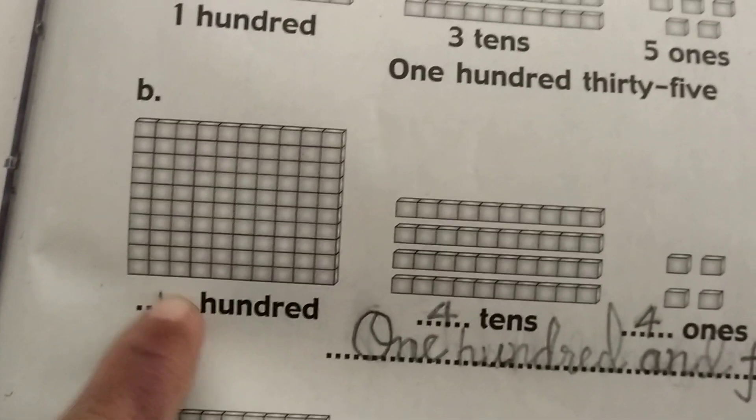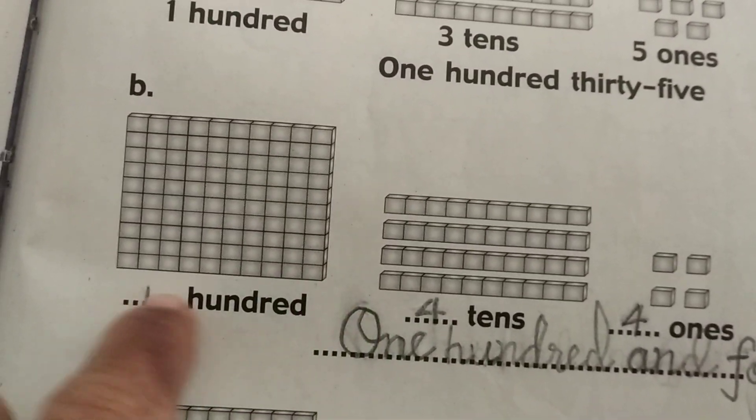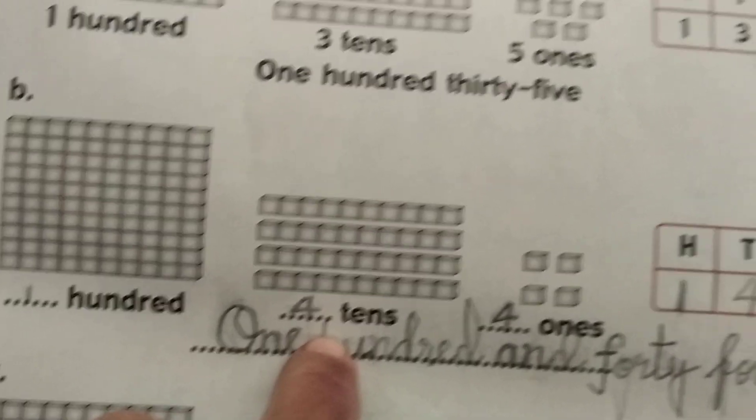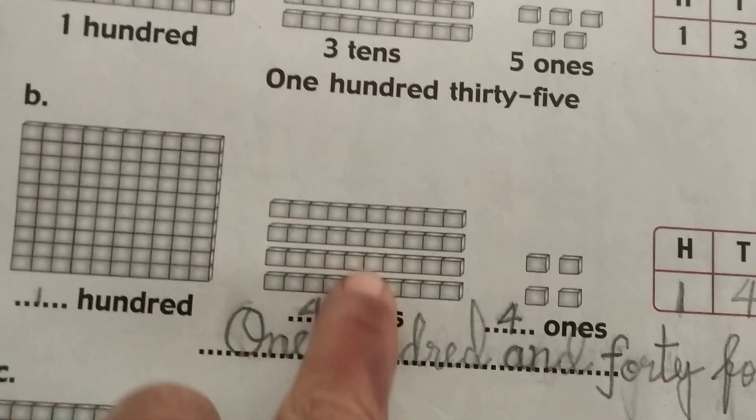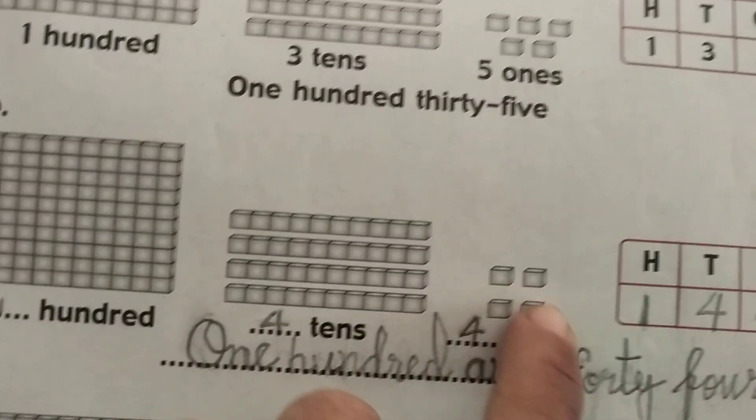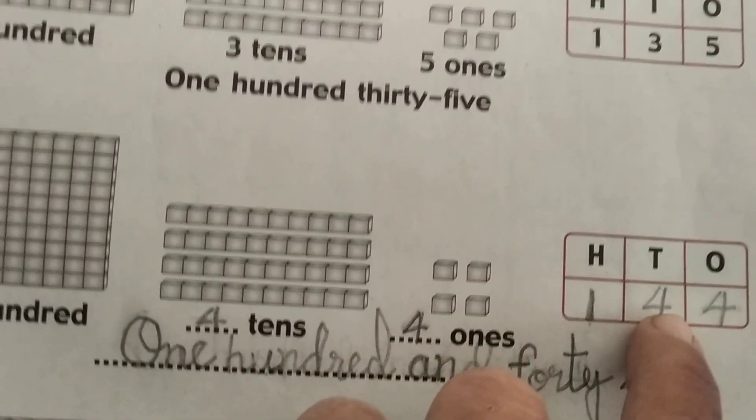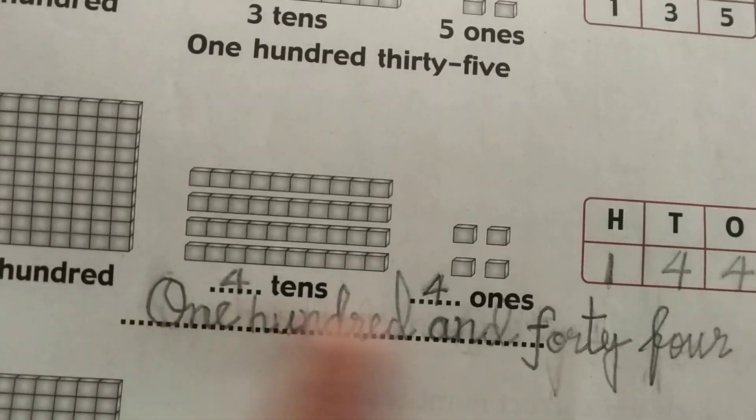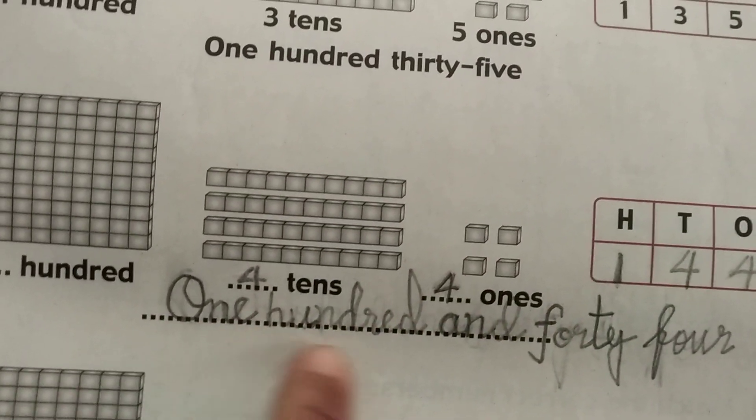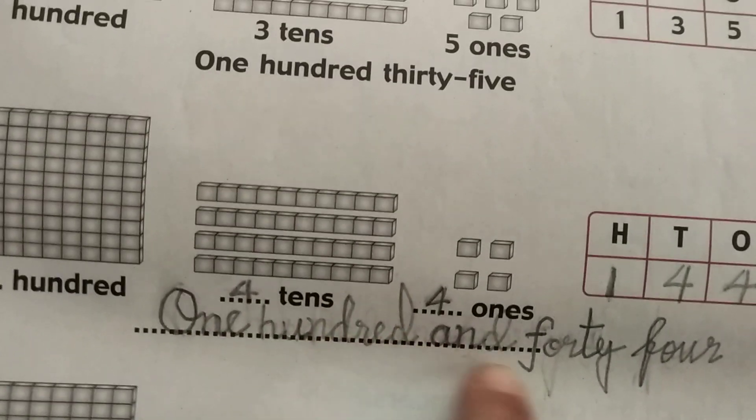Next one: 1 hundred and 4 tens—1, 2, 3, 4—and 4 ones—1, 2, 3, 4. So 1 hundred, 4 tens, and 4 ones. The number is 144.